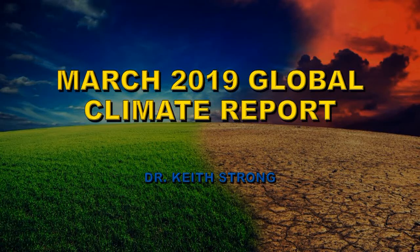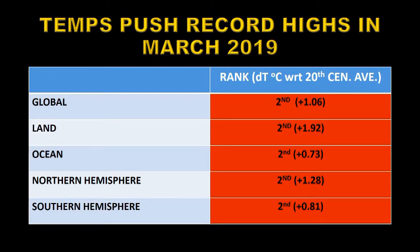Welcome. NOAA has just released its March 2019 global climate report and this video is a summary of that report. Overall globally it was the second warmest March on record with a temperature anomaly that was 1.06 degrees centigrade above the 20th century average.